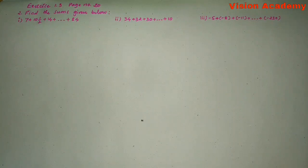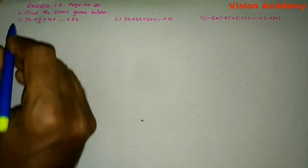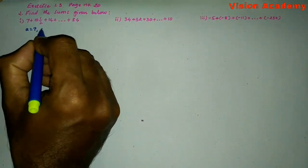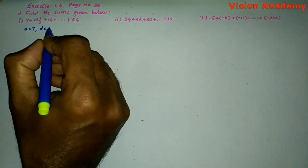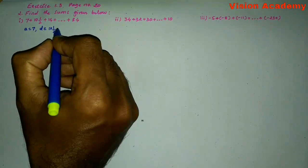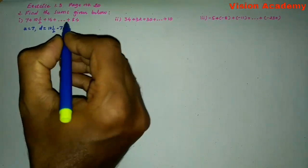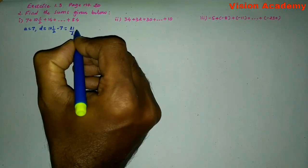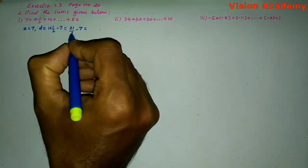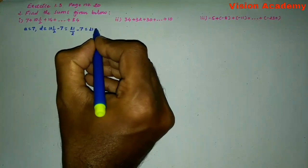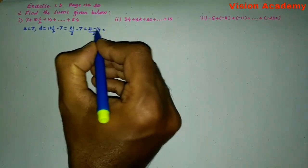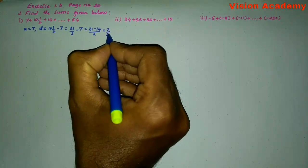First question: 7 plus 10 and 1/2 plus 14 plus so on plus 84. Let us find the solution for the given problem. Here, A is equal to 7 and the common difference D is equal to 10½ minus 7, which is equal to 21/2 minus 7, which gives me 21 minus 14 whole divided by 2, equal to 7 by 2.